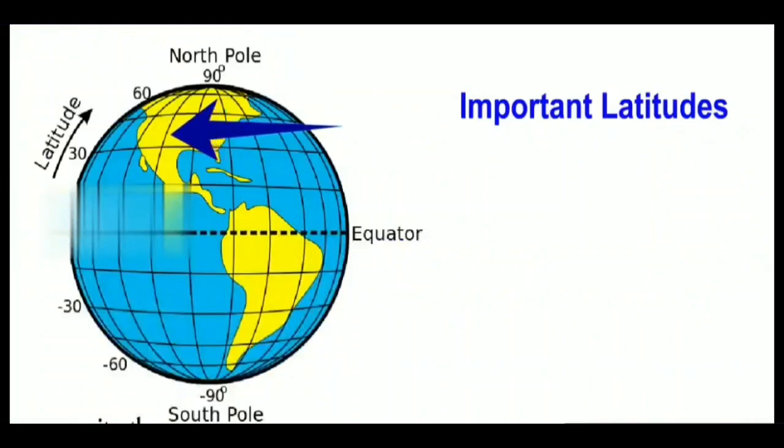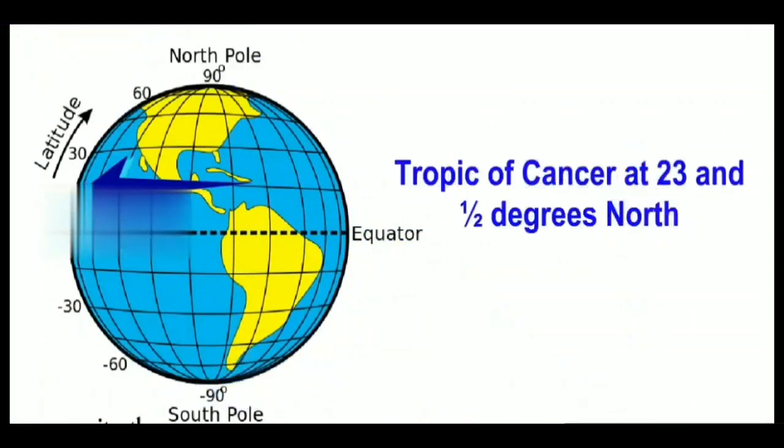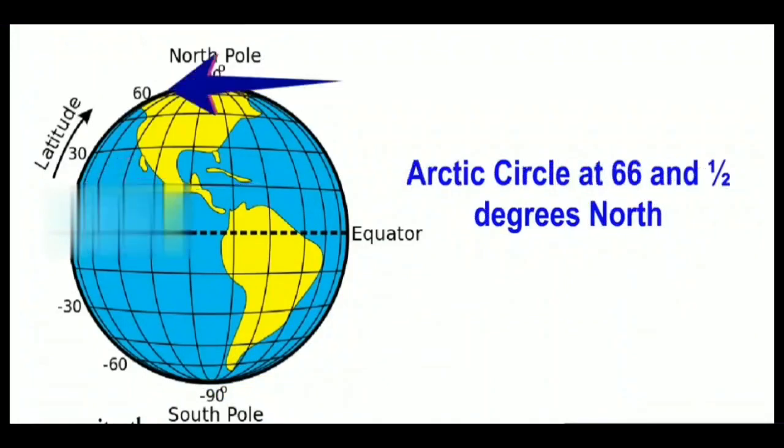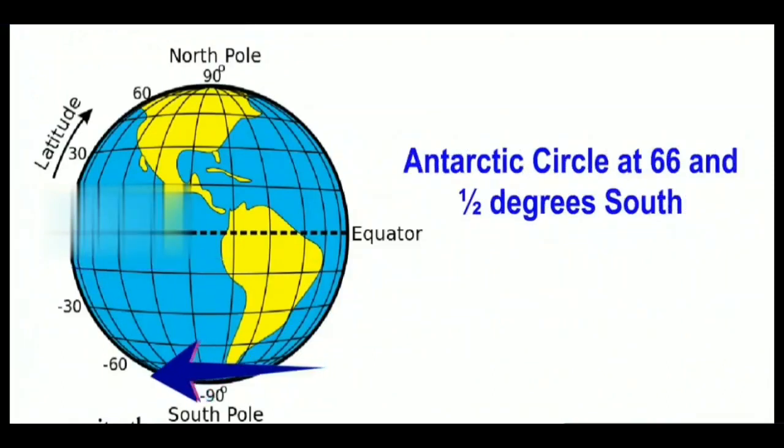The important latitudes. Equator and poles. In this case we can see the Tropic of Cancer at 23.5 degrees of north, the Arctic Circle at 66.5 degrees of north, the Tropic of Capricorn at 23.5 degrees of south, the Antarctic Circle at 66.5 degrees south.